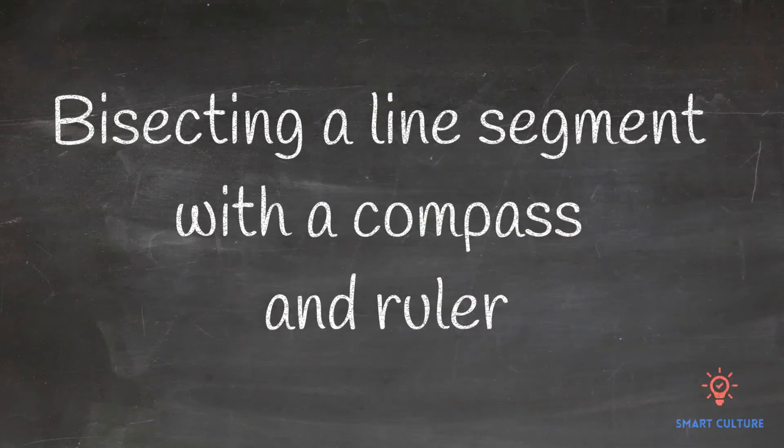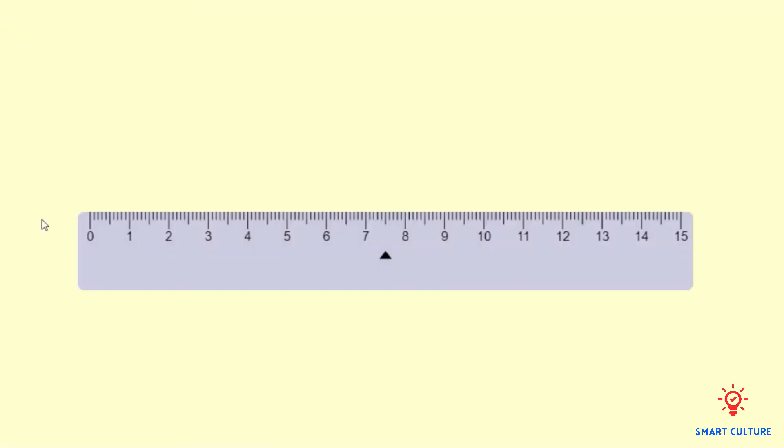What you have to do first is draw a line segment using a ruler and label it. Let's label it AB - A on the left hand side and B on the right hand side.